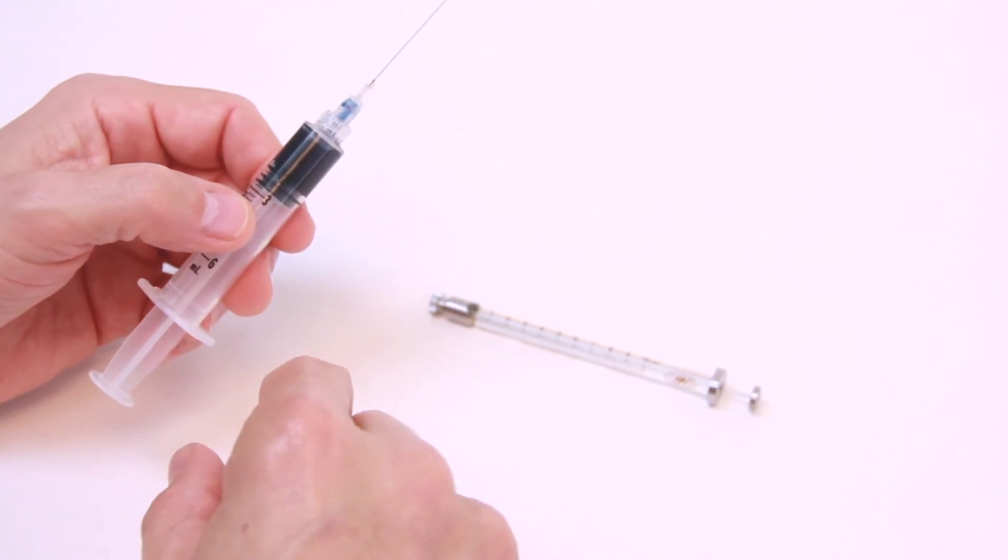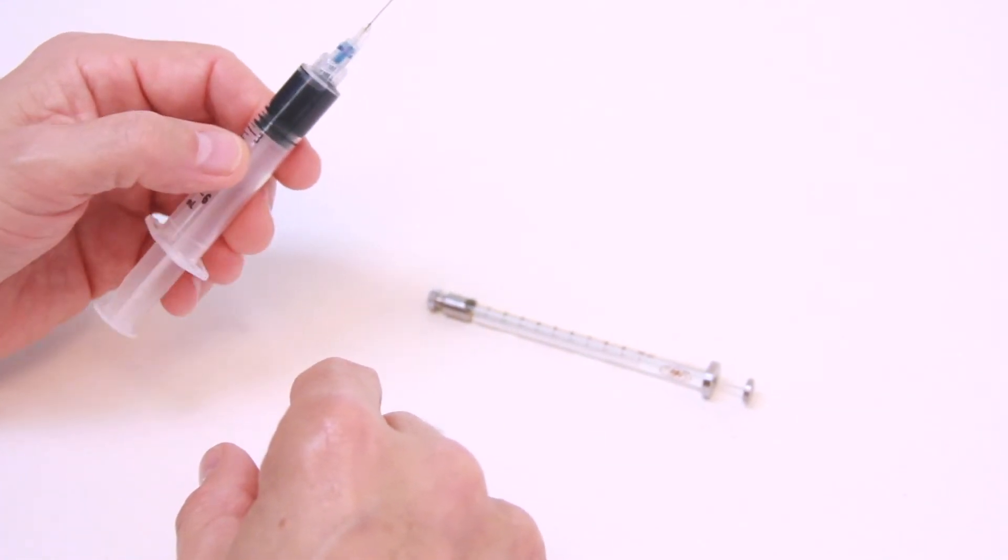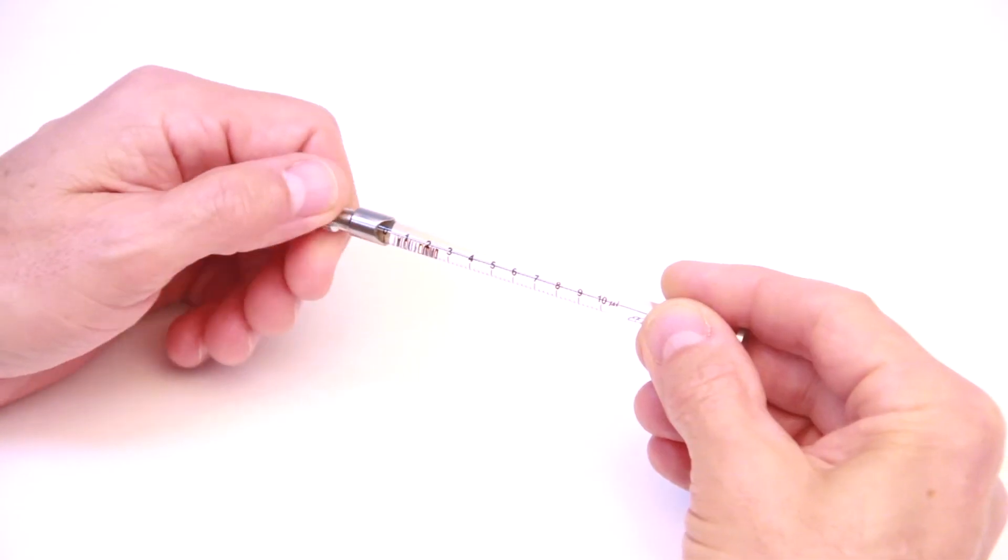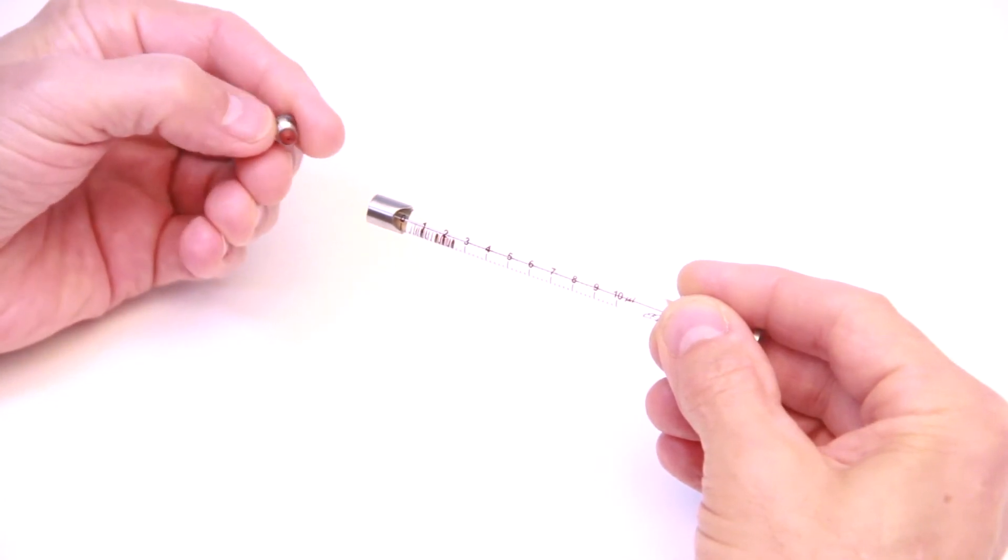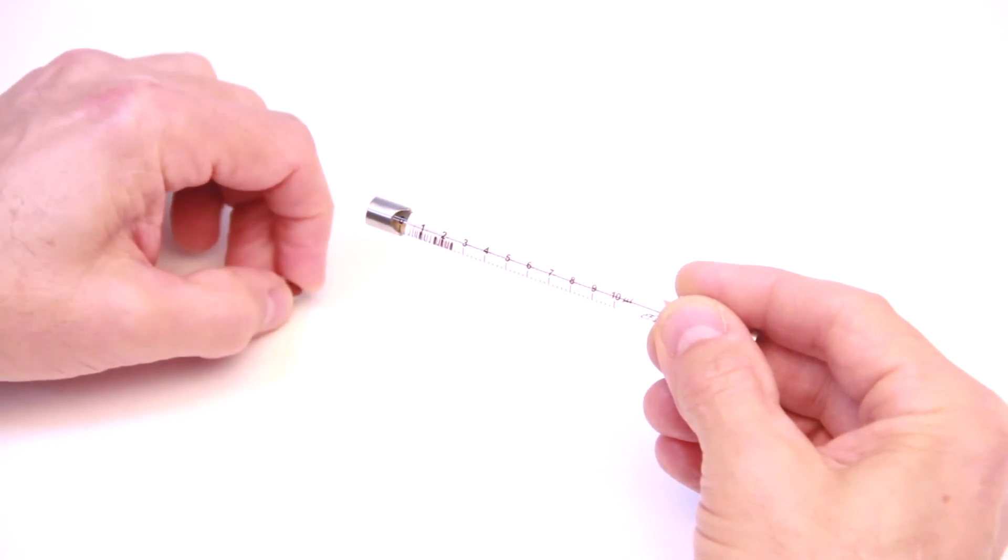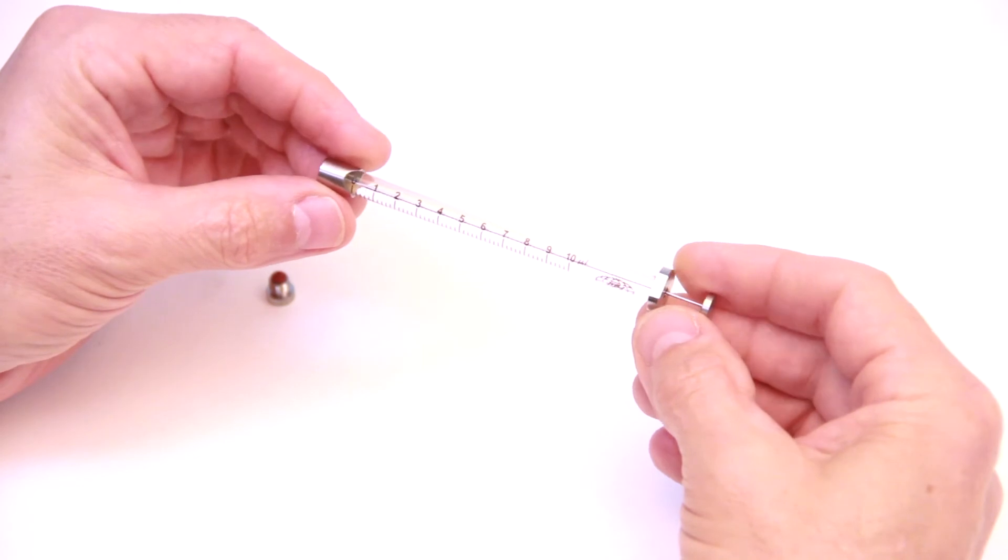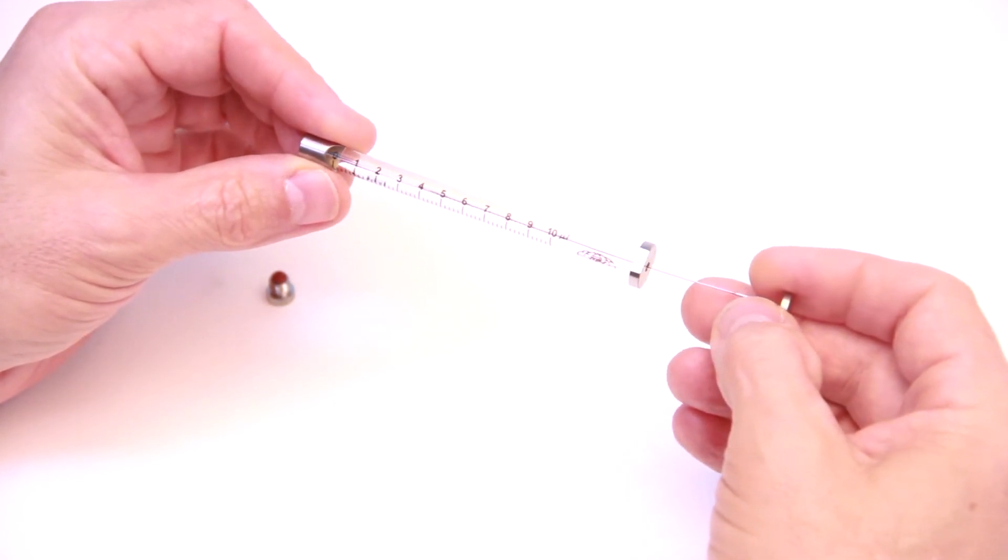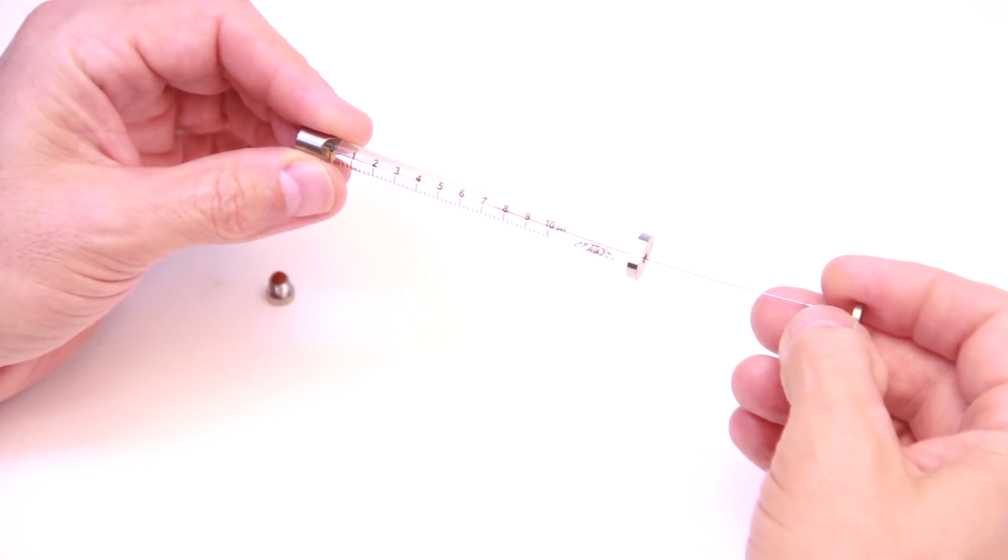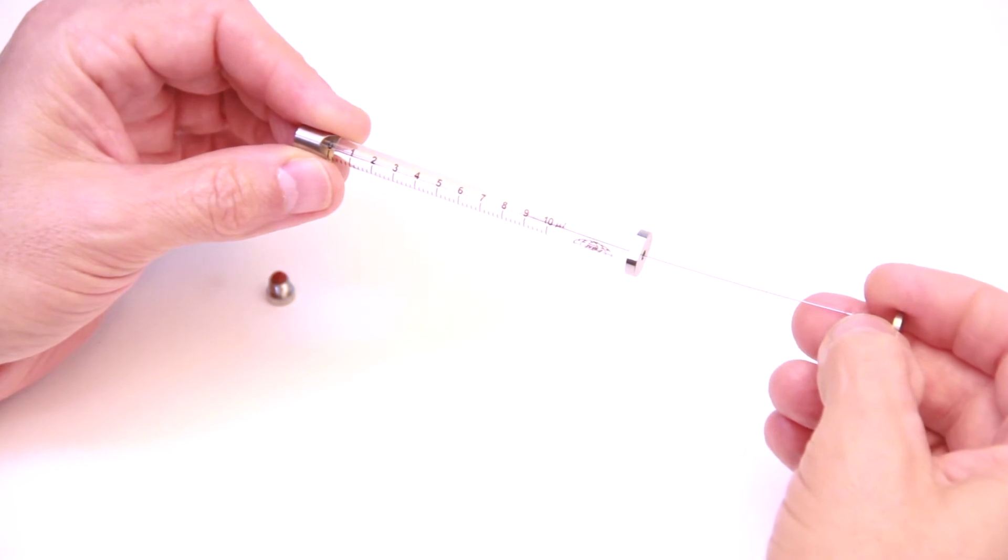So it's this simple: you just remove the locking cap from the NanoFil syringe along with the washer, pull back the plunger to the volume that you would like to use.